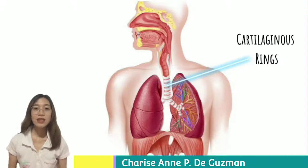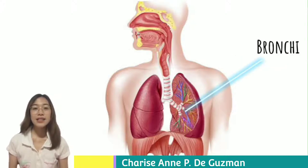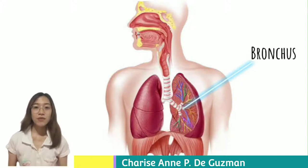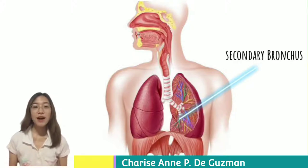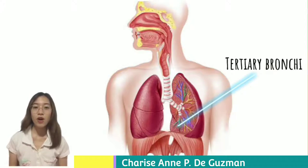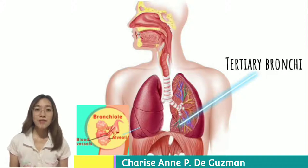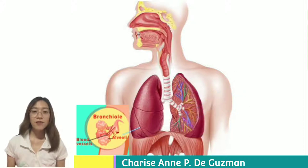The trachea has many C-shaped cartilaginous rings that prevent the windpipe from collapsing. The windpipe divides into two tubes called the bronchi — the single tube is called a bronchus. Each tube enters its respective lung. On entering the lungs, each bronchus divides into secondary bronchi, then into tertiary bronchi, and finally into bronchioles. Bronchioles terminate in clusters of tiny air sac-like structures called alveoli, which are surrounded by blood vessels.